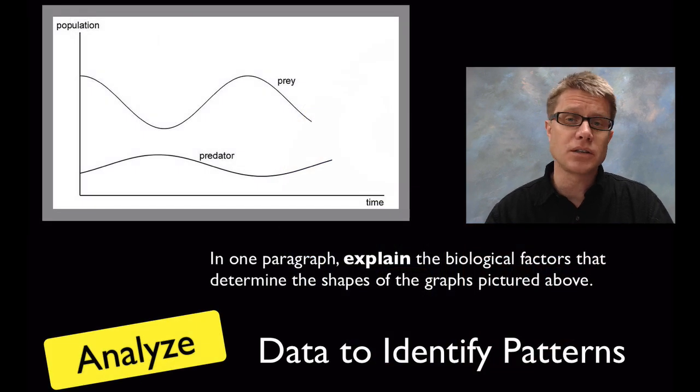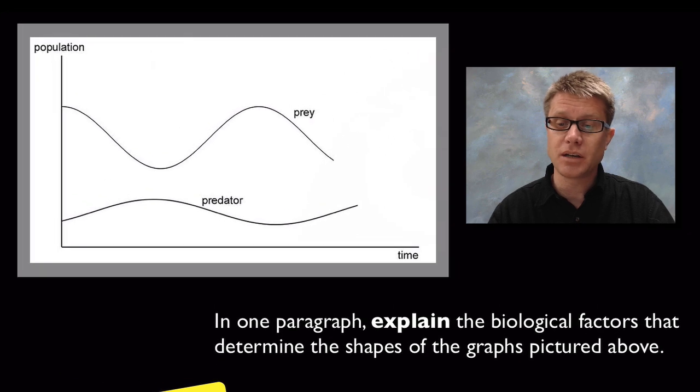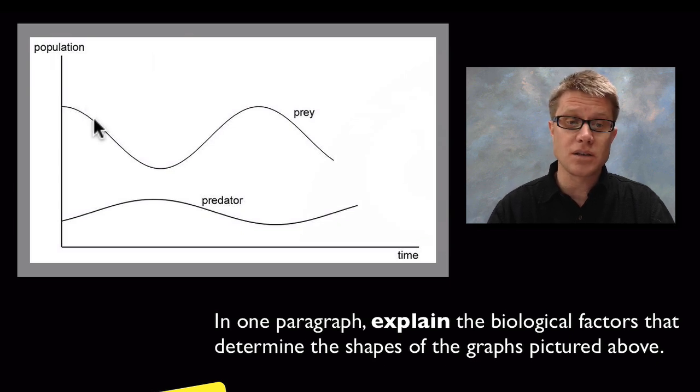Let's look at some examples. They're going to ask you questions in three different areas. The first one is they want you to be able to analyze data to identify patterns. This would be an example of a short essay question they might ask: In one paragraph explain biological factors that determine the shape of the graphs pictured above. This is clearly a perfect example of the predator-prey relationship. They're asking you to look at biotic factors. Why is the prey going to vary like this?